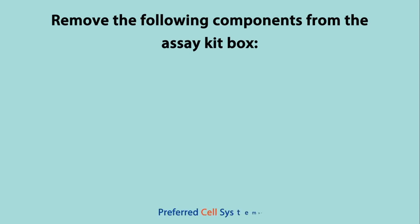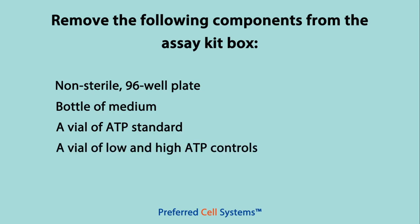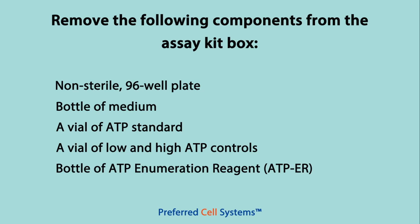This calibration and standardization protocol can be found in any ATP bioluminescence assay kit manual, which can be downloaded from the Preferred Cell Systems website. To perform this step for any ATP bioluminescence assay from Preferred Cell Systems, you will need to remove the non-sterile 96-well plate from the assay kit box, as well as the bottle of medium, a vial of ATP standard, a low and high ATP control vial, and the bottle of ATP enumeration reagent.